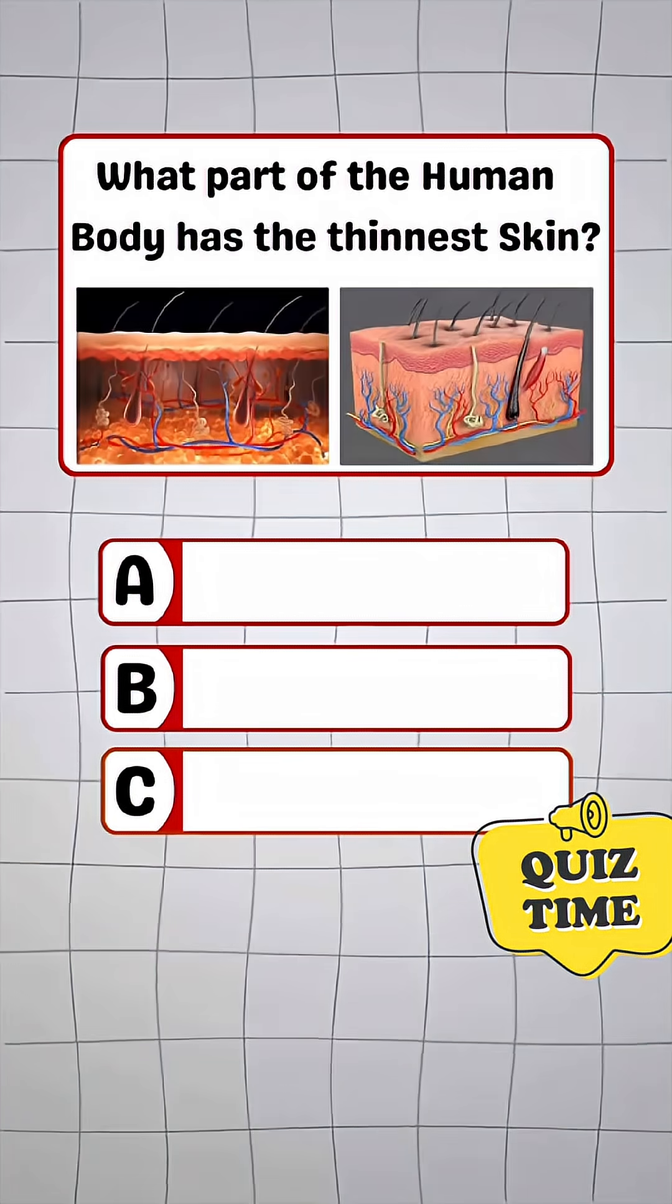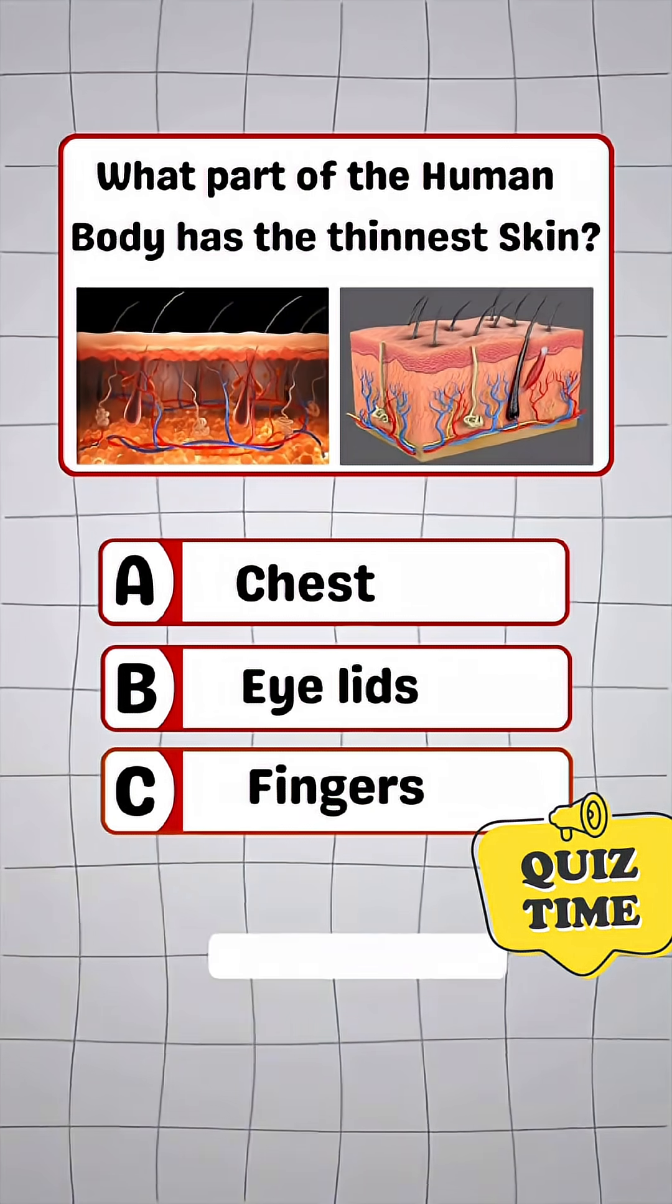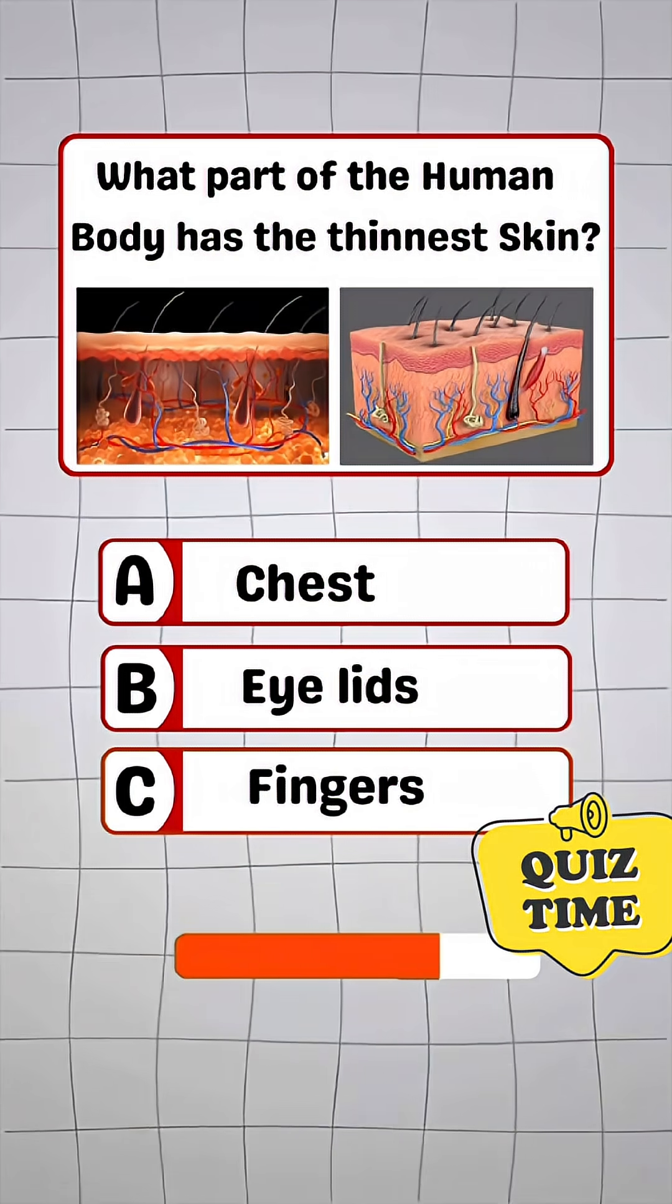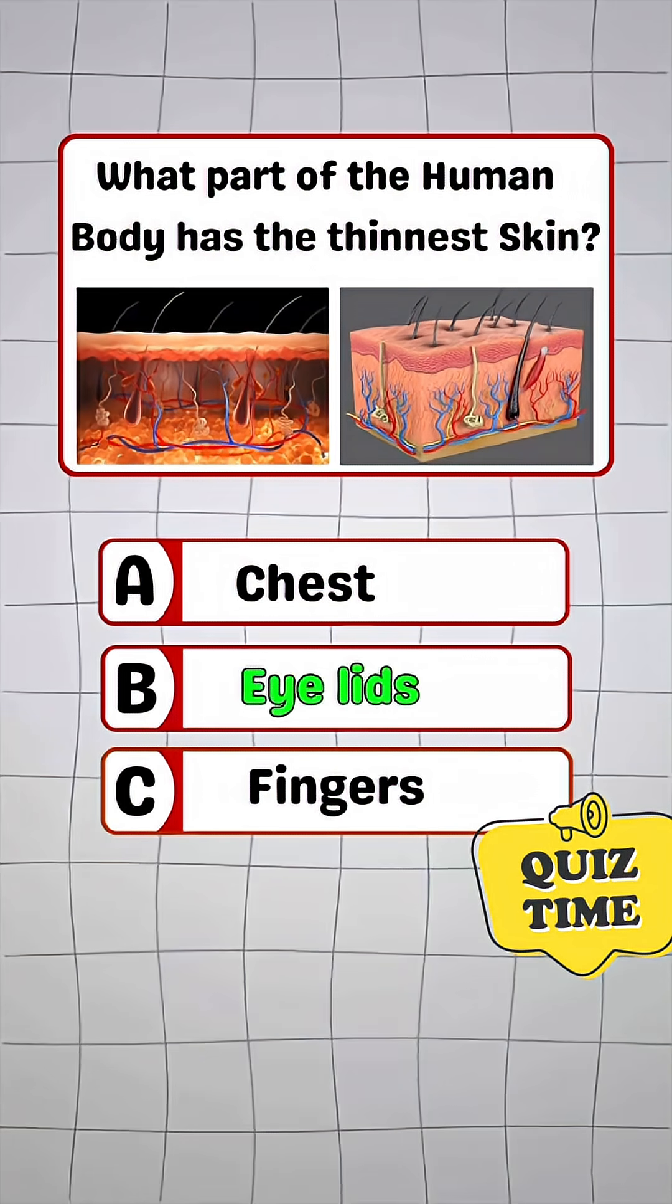Question 3. What part of the human body has the thinnest skin? Answer B. Eyelids.